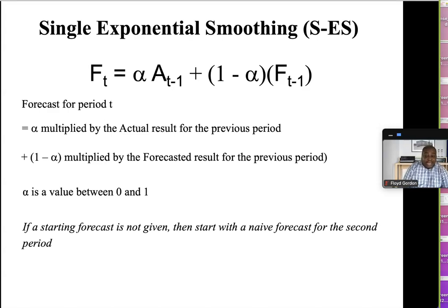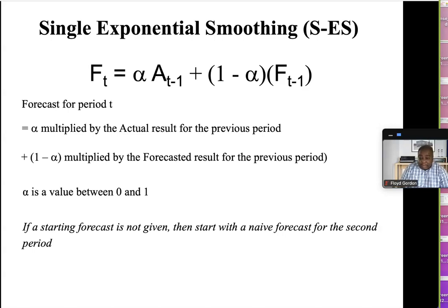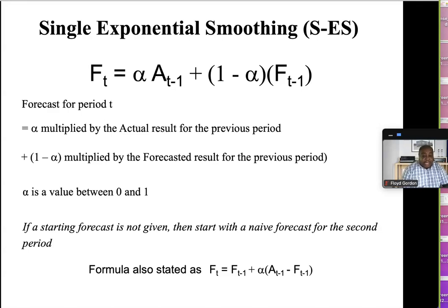If we do not have a forecast to begin with, then we start with a naive forecast for the second period, saying that the forecast for period two is equal to the actual value from the previous period. We looked at naive forecasts when we did our simple moving average. We also have another version of the formula that's popularly used, but I prefer the one we're going to be using — I think it's a little simpler.